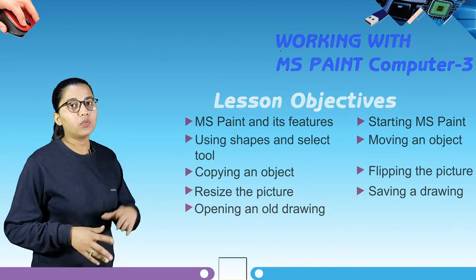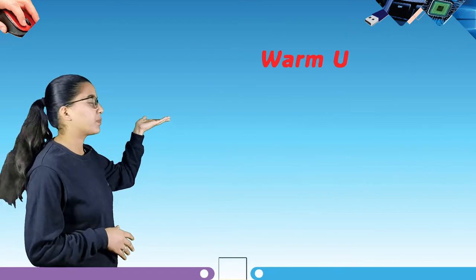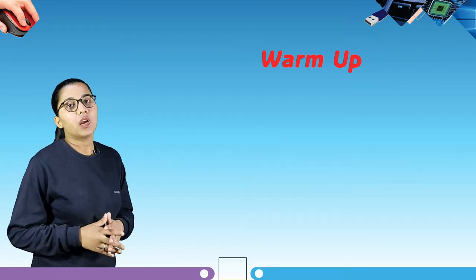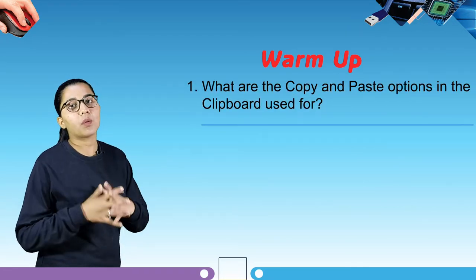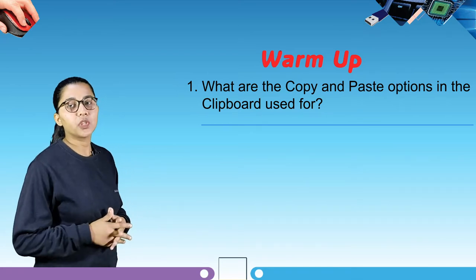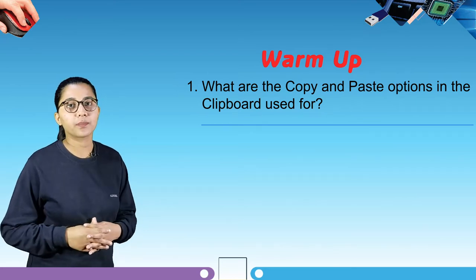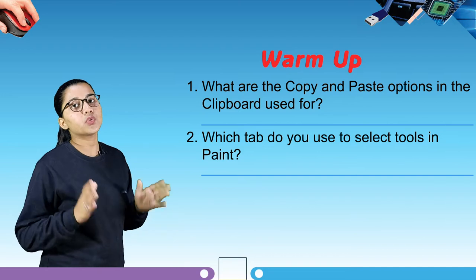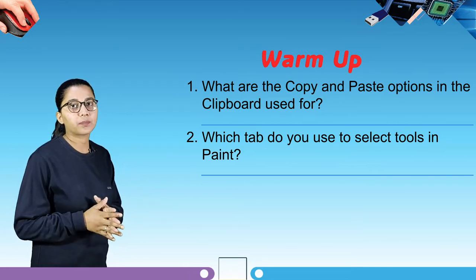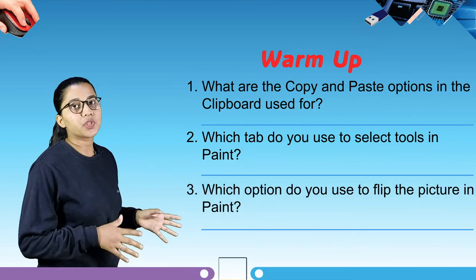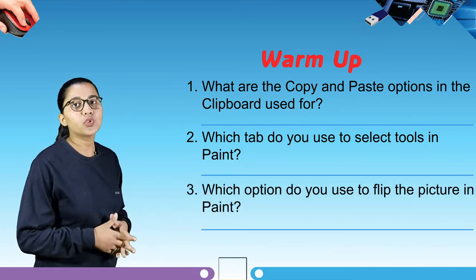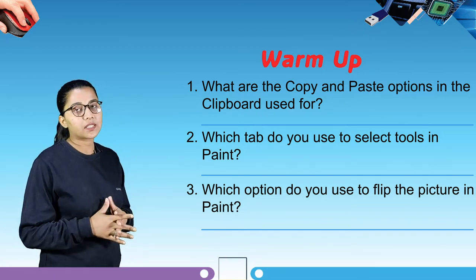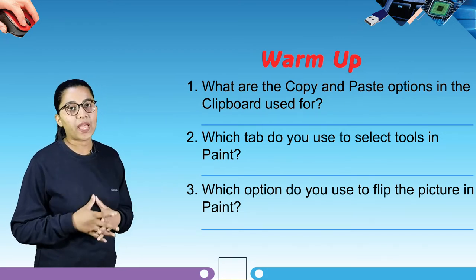Now we have some warm up questions. Our first question is: what are the copy and paste options in the clipboard used for? Second, which tab do you use to select tools in Paint? Third, which option do you use to flip the picture in Paint? Answer the following questions in the given blank.